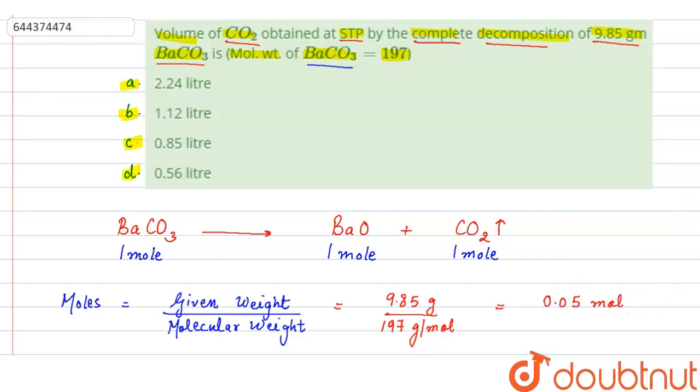So it means we have here 0.05 moles of barium carbonate. Now if one mole of barium carbonate gives one mole CO2, it means 0.05 moles of barium carbonate will give 0.05 moles of CO2. Now we have calculated moles but we need volume at STP.